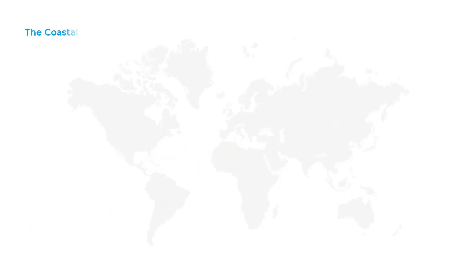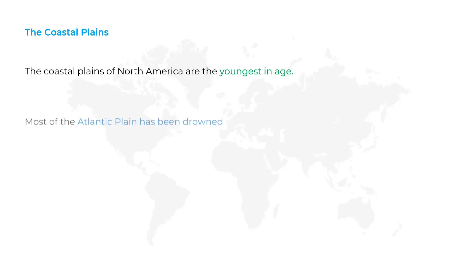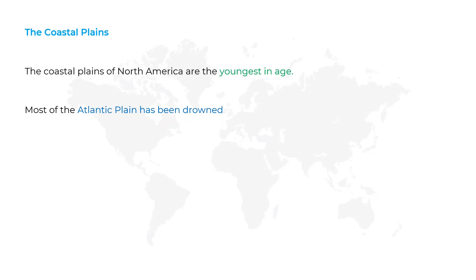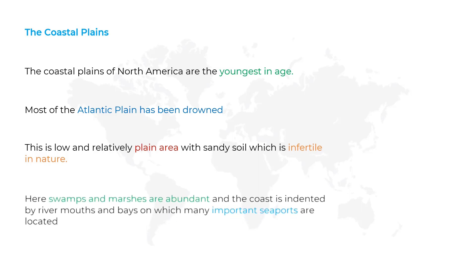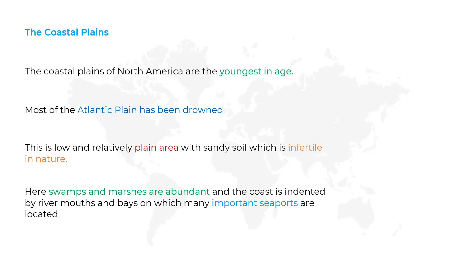Next, we are going to learn about Coastal Plains. The Coastal Plains of North America are the youngest in age. Most of the Atlantic Plains have been drowned — that is, they went underwater. This is a low and relatively flat area with sandy, infertile soil, which cannot be used for agricultural purposes. Swamps and marshes are common here, and the coast is indented by river mouths on which many important seaports are located.